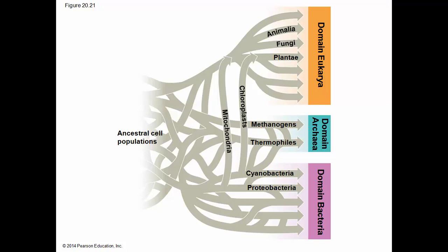Horizontal gene transfer is the movement of genes from one genome to another, generally among bacteria or archaea. It occurs by exchange of transposable elements and plasmids, viral infection, and fusion of organisms. Horizontal gene transfer complicates efforts to build the tree of life. It may have been common enough in the early history of life that relationships are better depicted by a tangled web than a branching tree. Here, the schematic shows that mitochondria and chloroplasts originated as bacteria and were subsumed by plants, animals, and fungi through endosymbiosis.